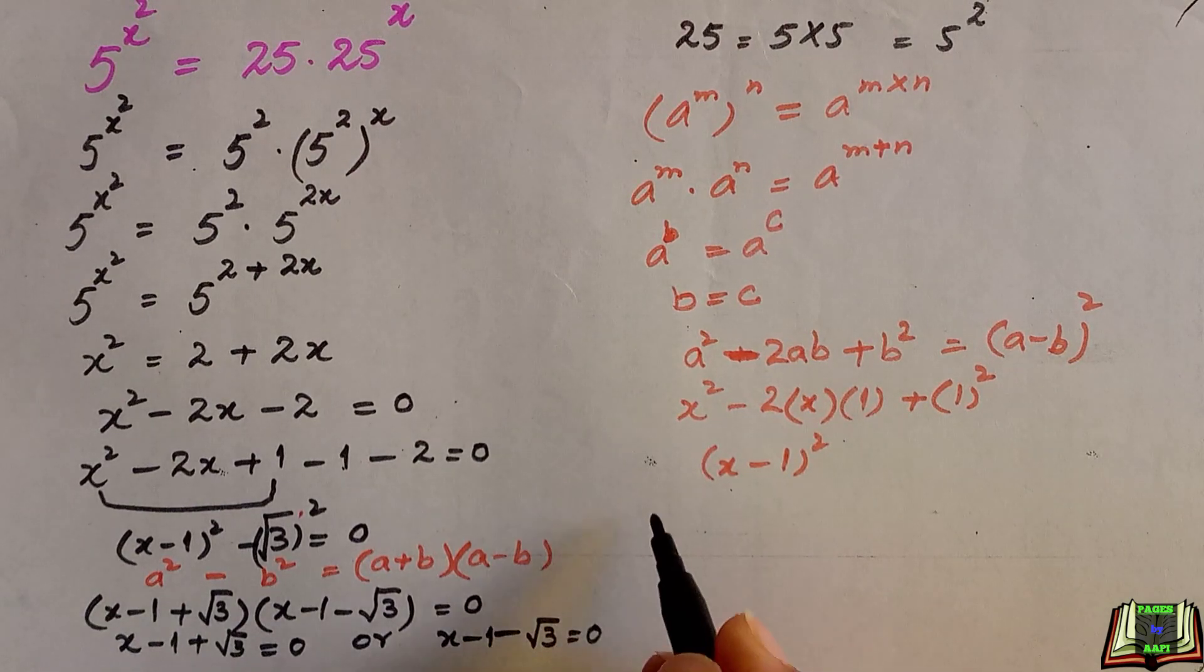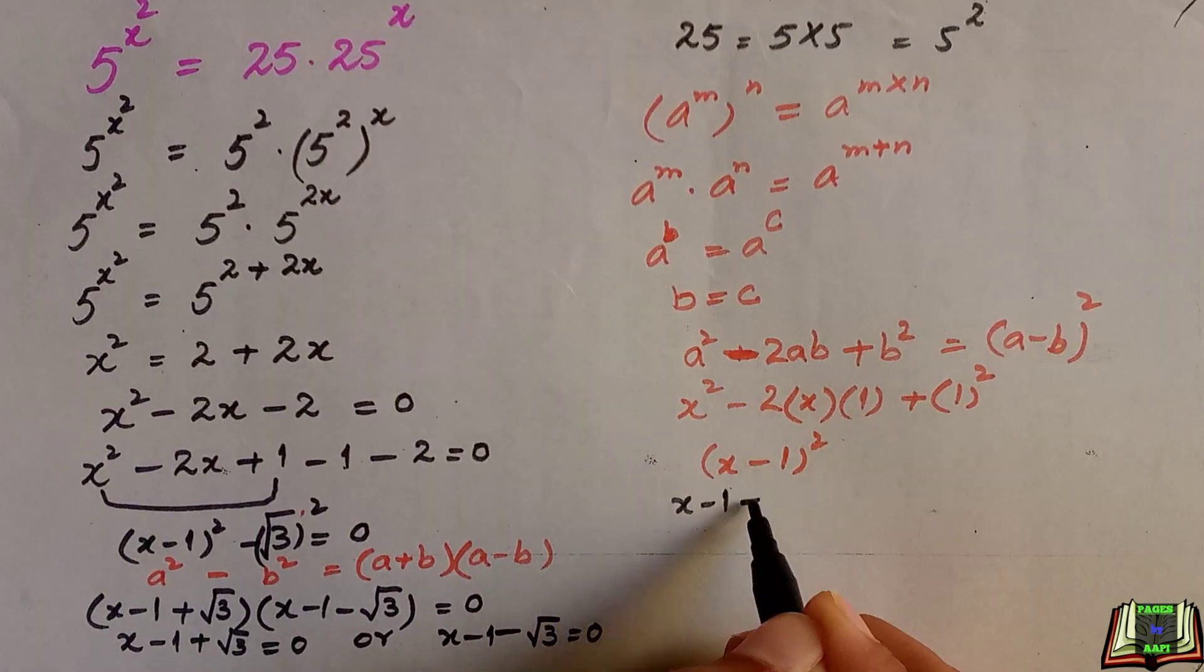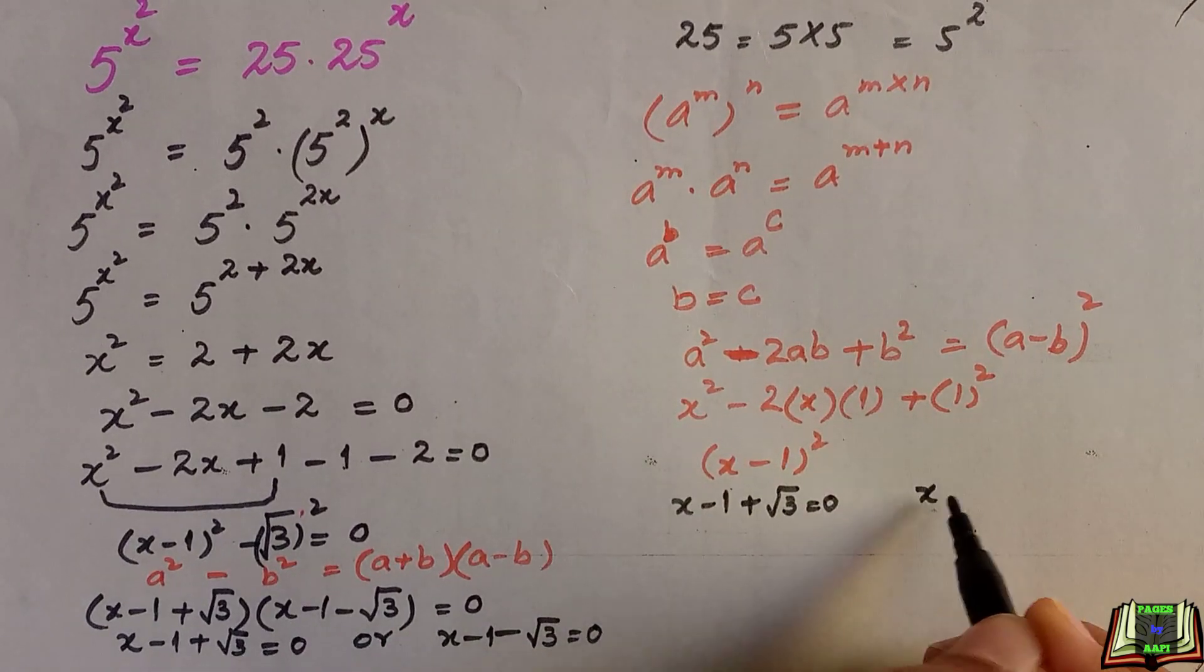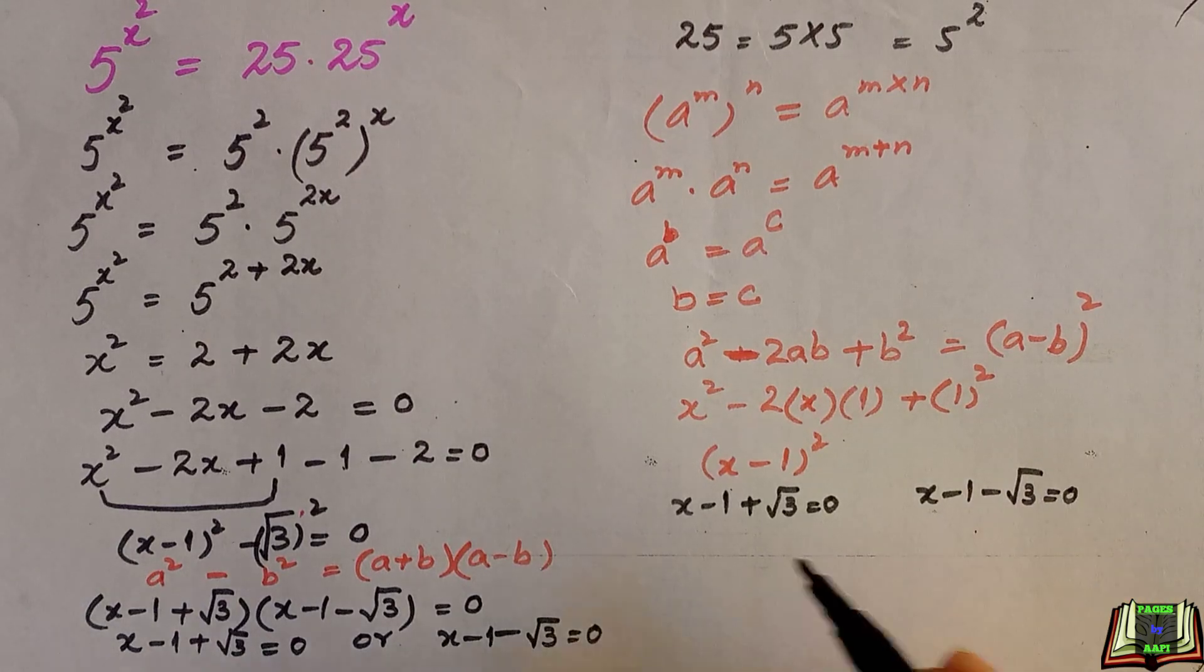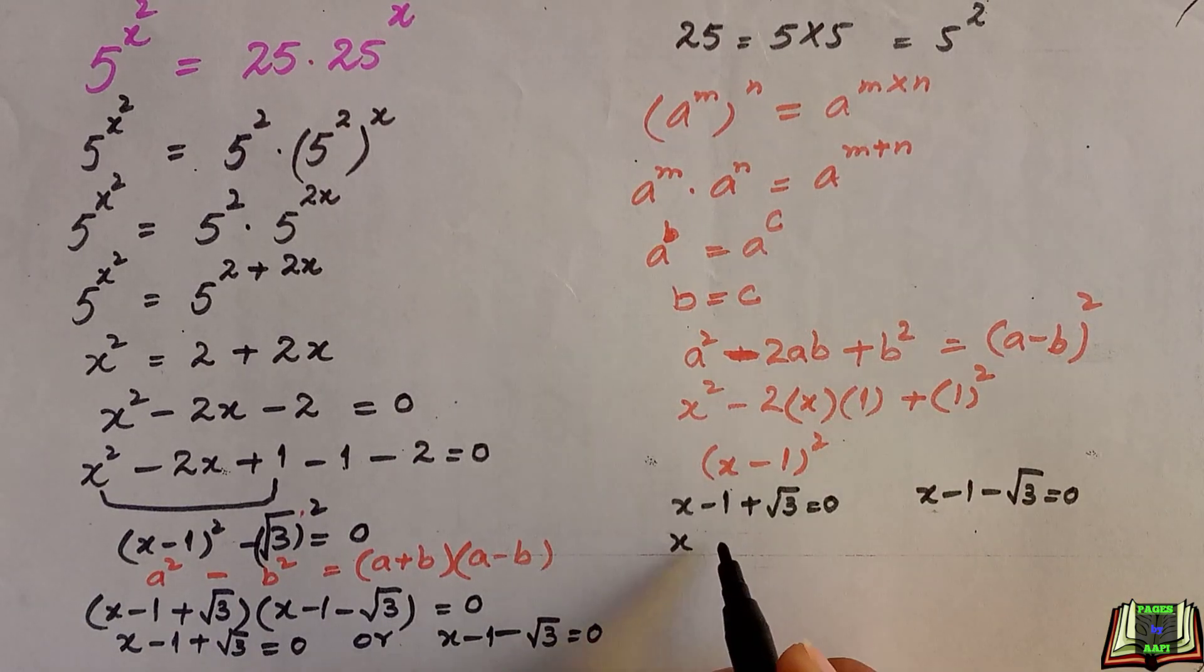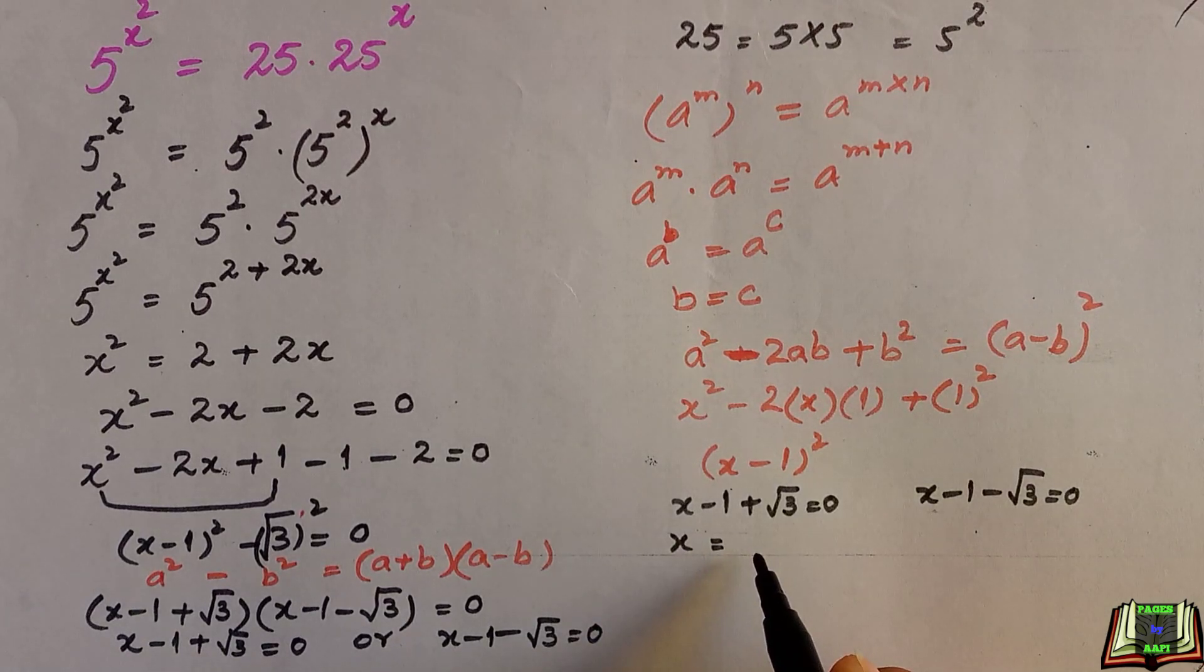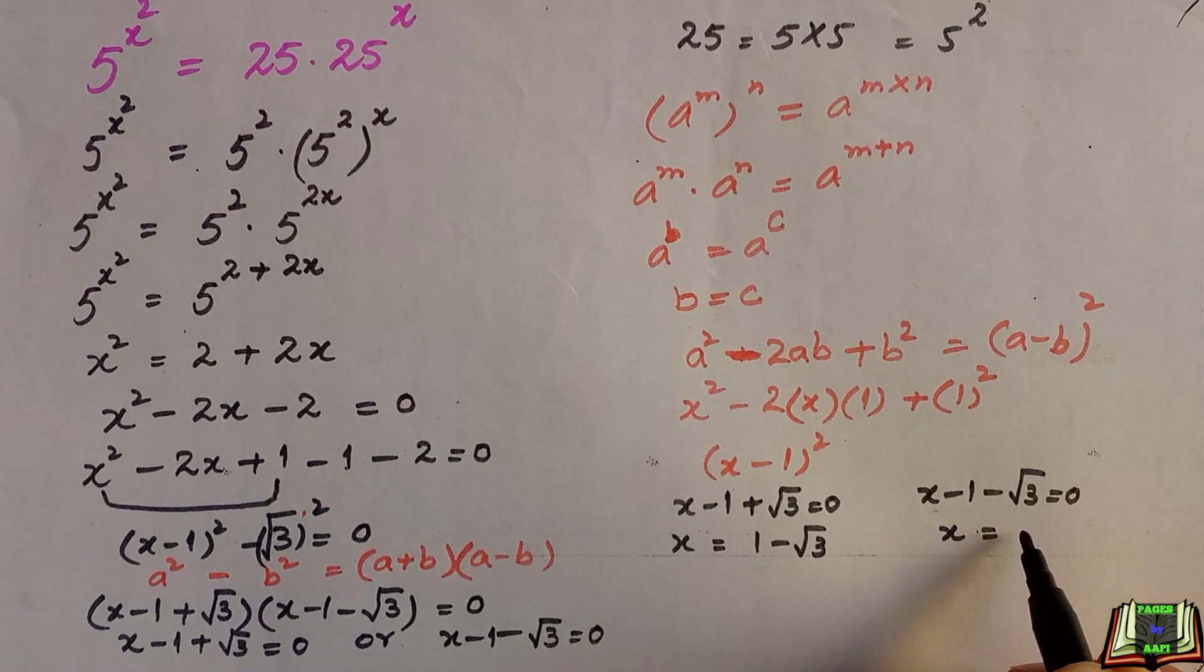From these two we will find the value of x. The first one is x minus 1 plus root 3 is equal to 0, or x minus 1 minus root 3 is equal to 0. From the first case, if we take minus 1 to the right hand side it will become positive and root 3 will become negative, so x equals 1 minus root 3. And from there x is equal to 1 plus root 3.